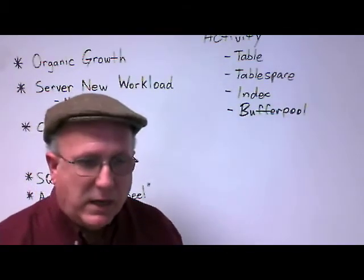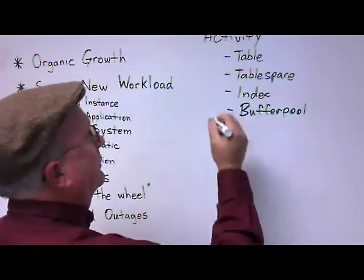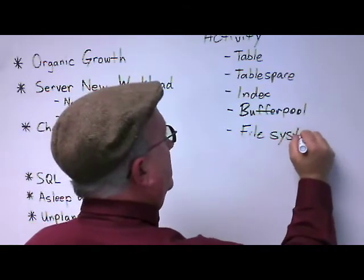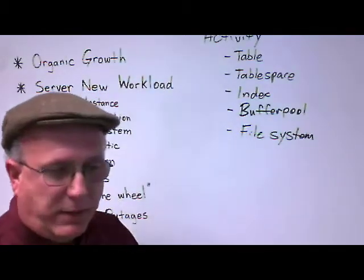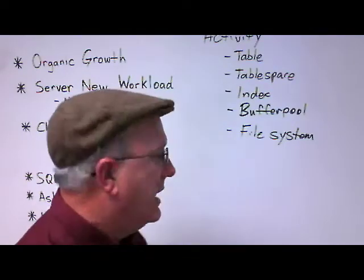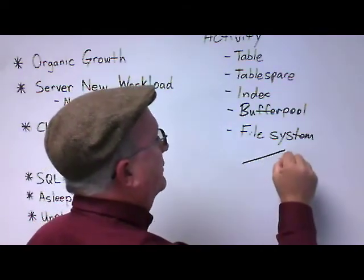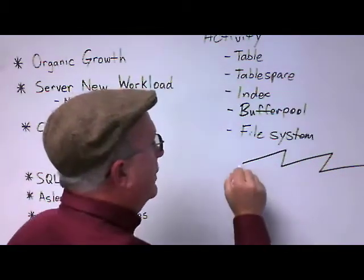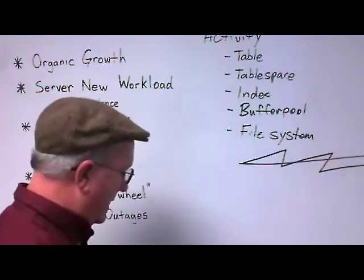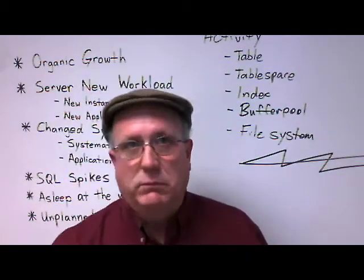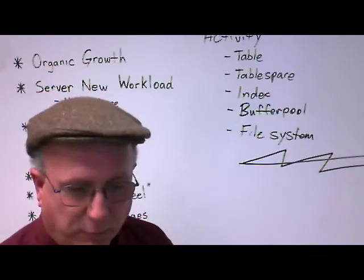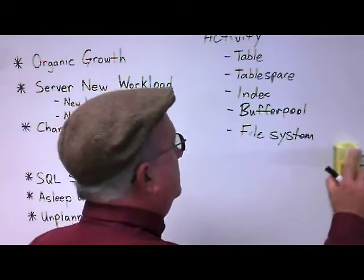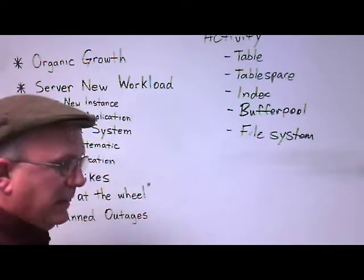Other things to look at in terms of activity would be overall file system usage — trying to see how much is being used over time. Do I see something where it goes up, drops off, goes up, drops off? Or do I have something where it's just growing steadily over time? This is something that needs to be watched and factored into performance analysis.